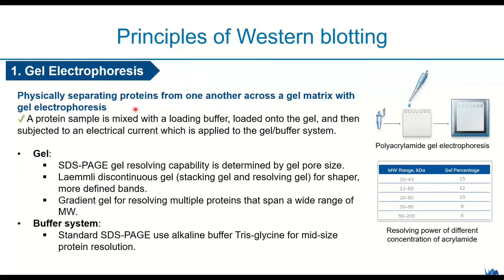In gel electrophoresis, we physically separate proteins from one another across a gel matrix. A protein sample is mixed with a loading buffer, loaded into a gel, then subjected to an electrical current applied to the gel buffer system. The universal gel type is SDS-PAGE, which resolves proteins based on molecular weight, determined by gel pore size. We have discontinuous gels with a stacking gel on top of a resolving gel for sharper bands, and commercially available gradient gels such as 4%–15% for resolving multiple proteins spanning a wide range of molecular weights.